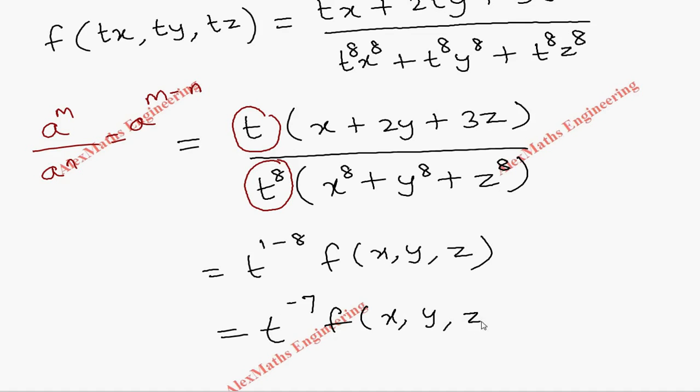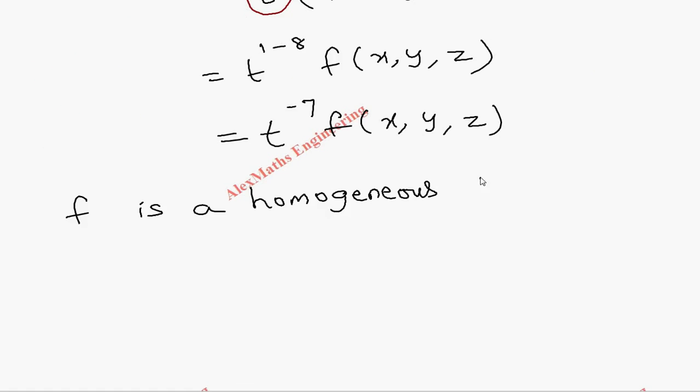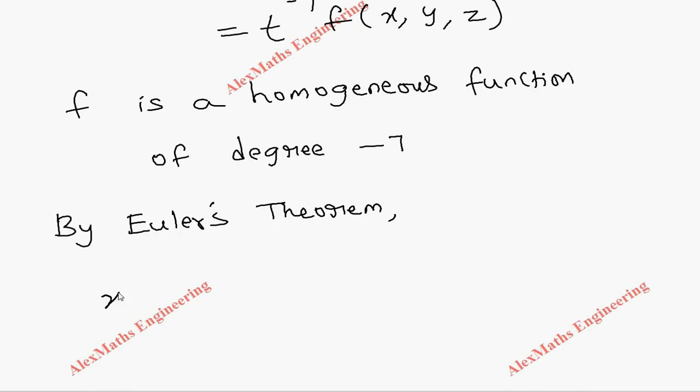From this, it is clear that f is a homogeneous function of degree minus 7. So by Euler's theorem, x into ∂f/∂x plus y into ∂f/∂y plus z into ∂f/∂z equals n.